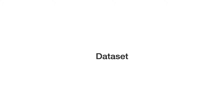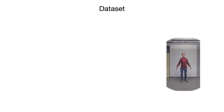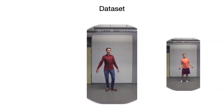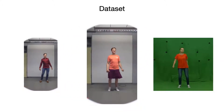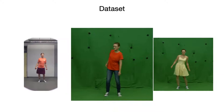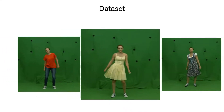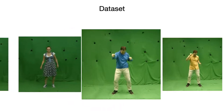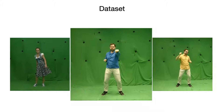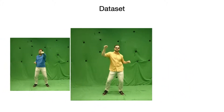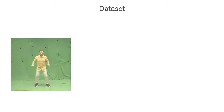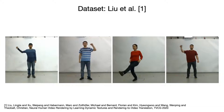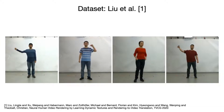For our experiments, we capture videos of up to 10 minutes showing target actors in a variety of clothing. Our dataset comprises simple jeans and shirts, a swinging skirt, a loose t-shirt, two dresses with complicated texture and wrinkle patterns, and a hoodie. Our sequences will be publicly available and can be downloaded from the project page. Additionally, we test our method on the dataset provided by Liu and colleagues, featuring four actors in tight clothing.